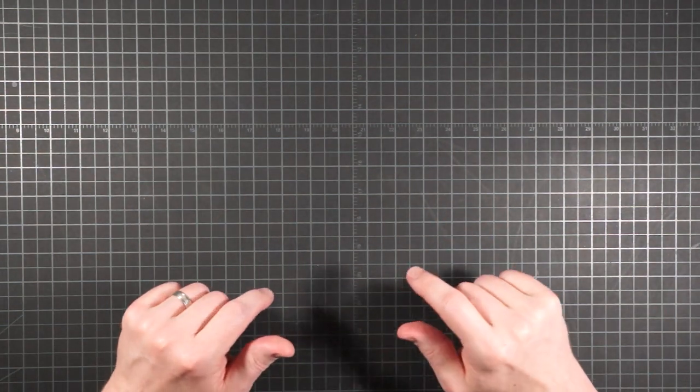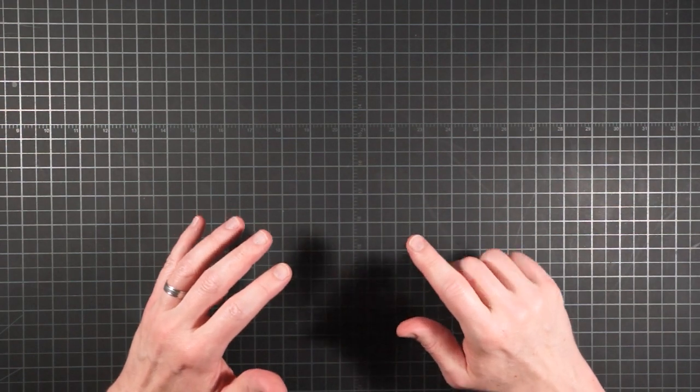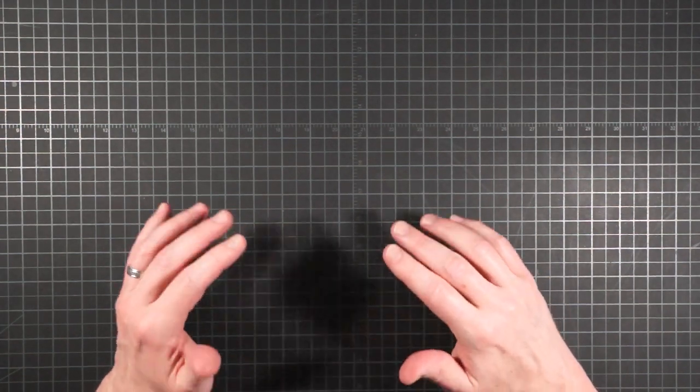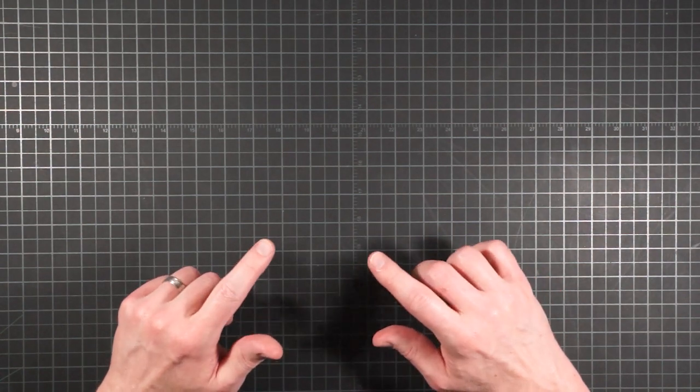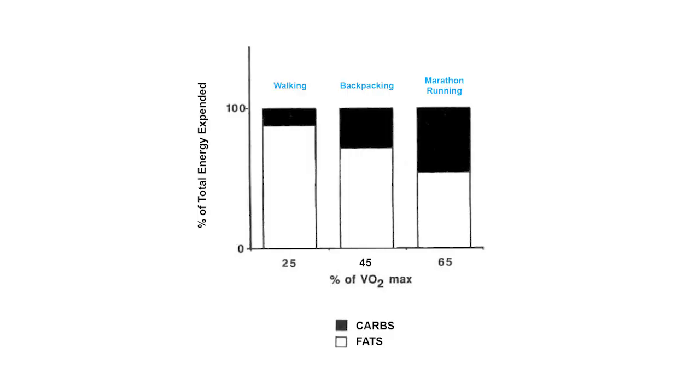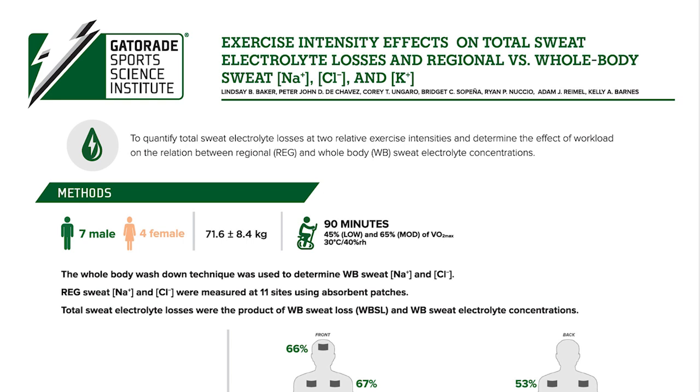When comparing sweat loss studies there can be an apples to oranges problem because the results will depend on the exertion level of the test subjects known as the VO2 max. It also depends on the temperature of their environment. Recalling from parts one and two, I developed an estimate for the VO2 max of hiking at 45 percent.